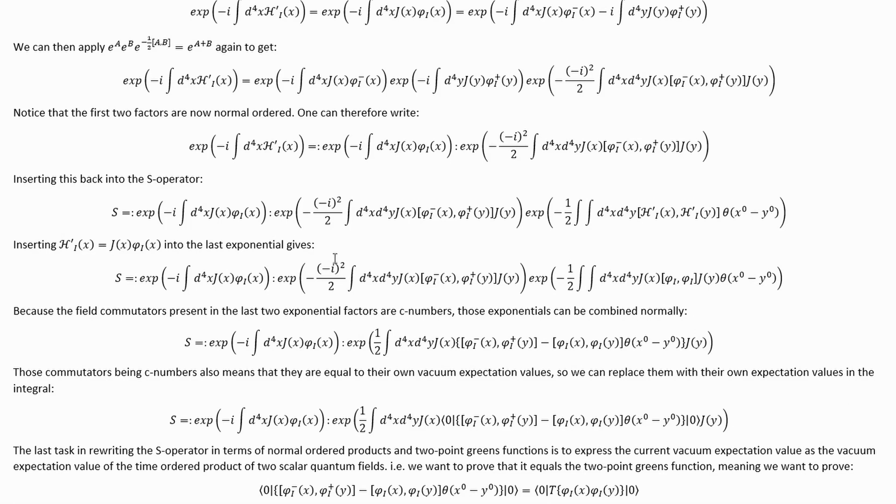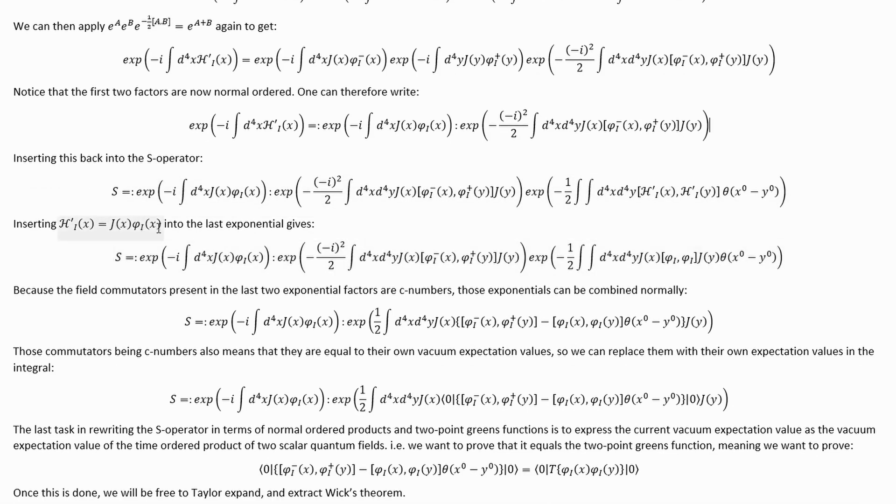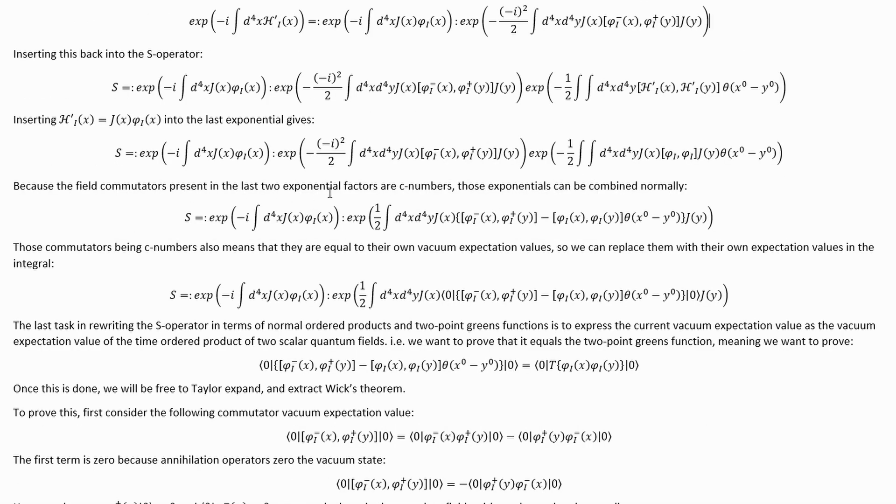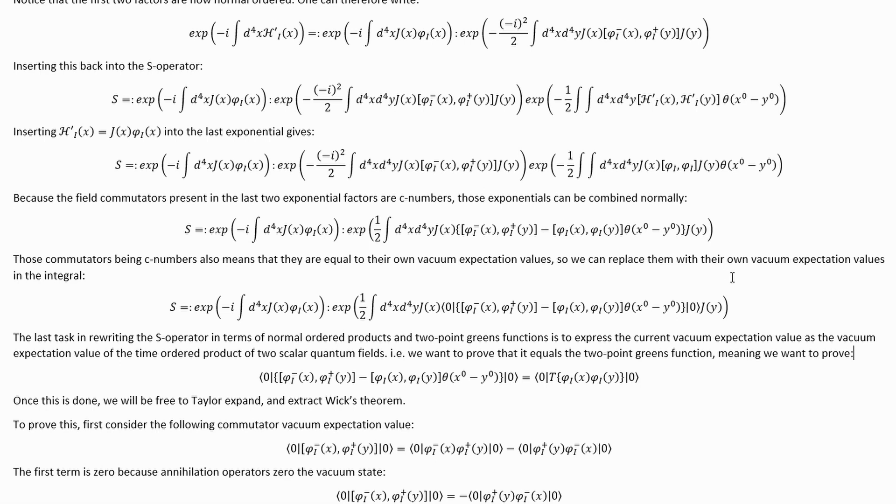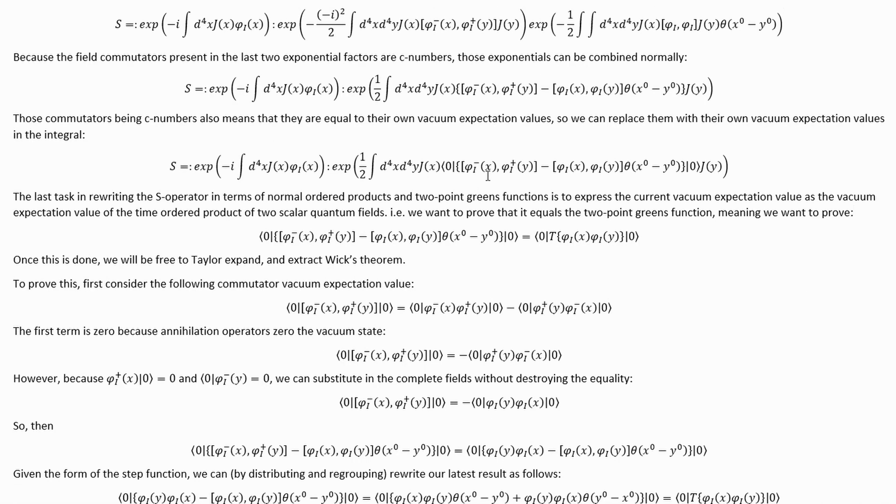Inserting this back into the S operator allows us to arrive here. We can then insert this formula for the interacting Hamiltonian, which we've already taken advantage of, into this factor there so that then we can rewrite it like that. Because the field commutators present in the last two exponentials are C numbers, those exponentials can be combined. So this one and this one. Leaving us with this, those commutators being C numbers also means that they are equal to their own vacuum expectation values. So we can replace them with their own vacuum expectation values in the integral. We haven't changed its value, of course, but we have gotten it a step closer to where we're trying to go.